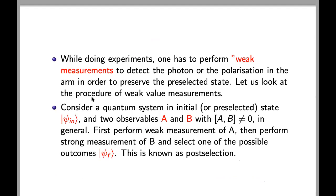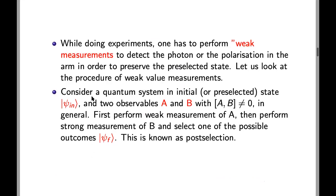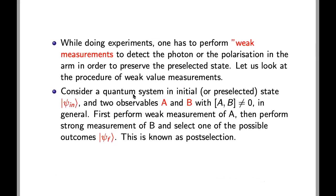Let us look at the procedure of weak value measurements. Consider a quantum system in initial or pre-selected state psi in, and two observables A and B, which have commutator non-zero in general. First, perform weak measurement of A, then perform strong measurement of B, and select one of the possible outcomes psi f. This is known as post-selection.